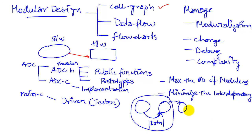We want to maximize the number of modules but also minimize interdependency, because when exchange of data between modules gets too large, communication becomes a bottleneck. Now let's look at modularity from the perspective of our game — the first thing we're going to look at is the call graph.